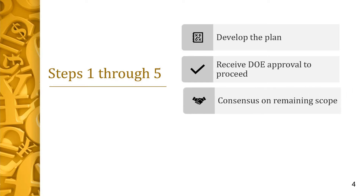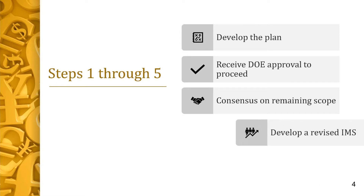Step 3 is where the parties reach consensus on the scope of the remaining effort as supported by the ground rules and assumptions for the comprehensive estimate to complete. This validation should not result in a scope change to the contract. The level of scope review should be done at the work package and planning package level. Any changes to the contract scope identified during validation require a bilateral modification by the contracting officer and should be tracked separately from the OTB process for contract budget-base reconciliation purposes.